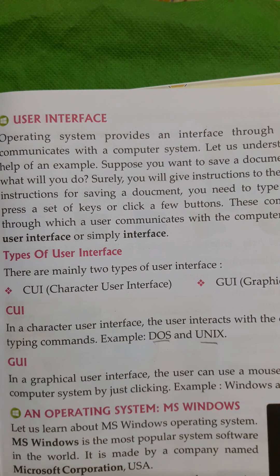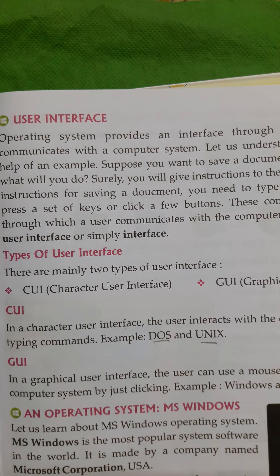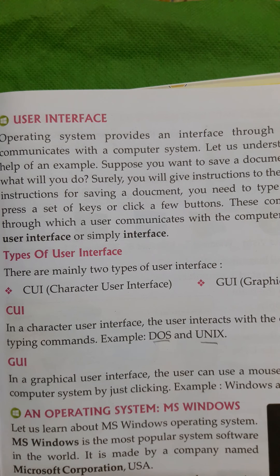So class, today we have learned about the operating system, how it is used as an interface between the user and the computer system, and the two types of interface: CUI and GUI. In the next class, we will learn more about the operating system interface, specifically MS Windows.